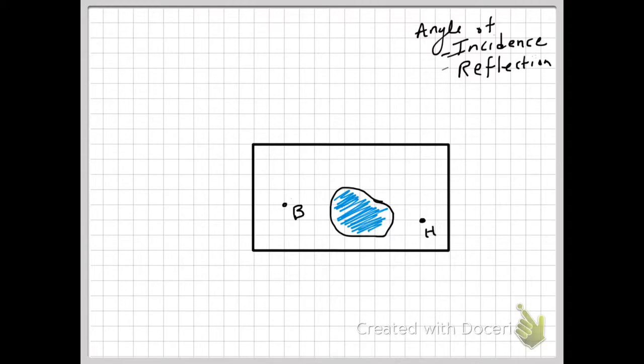The first thing you want to do is measure how far the hole is from the wall you want to bounce it off of. I have a grid here, but you can use a ruler in your case. Make sure you measure your distances perpendicularly, meaning directly at a 90 degree angle against the wall. So here, from H to the bouncing wall is 5 units. 1, 2, 3, 4, 5.